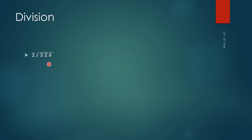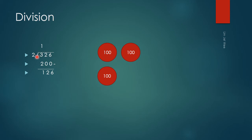But what if the number gets bigger — will this model still work? Let's use 336 divided by 2. First, the 3 is in the hundreds position. I need to group the hundreds in 2s. I have 200 here and one left over, so I only have one group of 2 hundreds, giving me 200. Subtracting gives me 136.